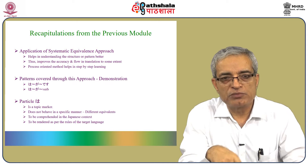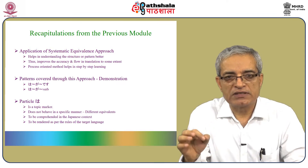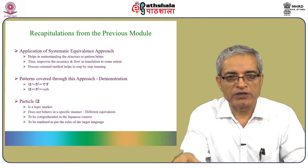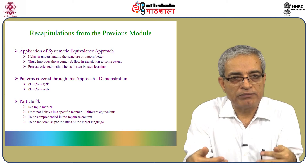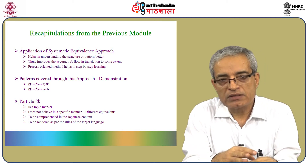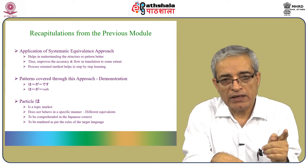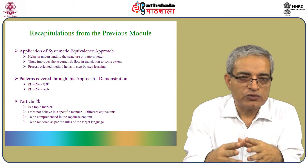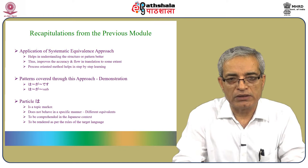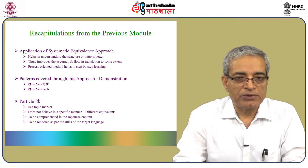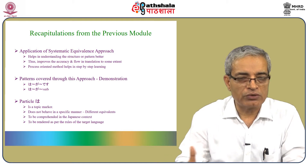Let's recapitulate what we have done in the previous module. We introduced the application of the Systematic Equivalence Approach, which helps in understanding structure better. It improves the accuracy and flow in translation to some extent, and the process-oriented method helps in step-by-step learning. The patterns covered through actual demonstration were Va-ga-dis and Va-ga-verb. Particle Va is actually a topic marker — it does not have a single equivalent all the time. It needs to be comprehended in the Japanese context and rendered as per the rules or flow of the target language.